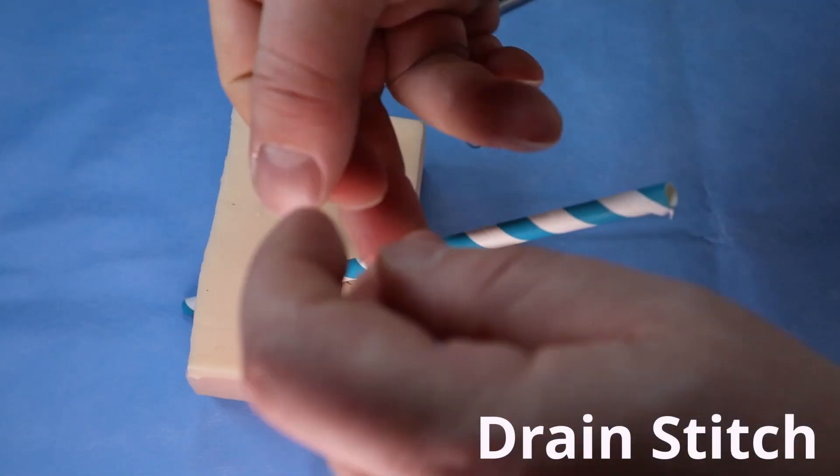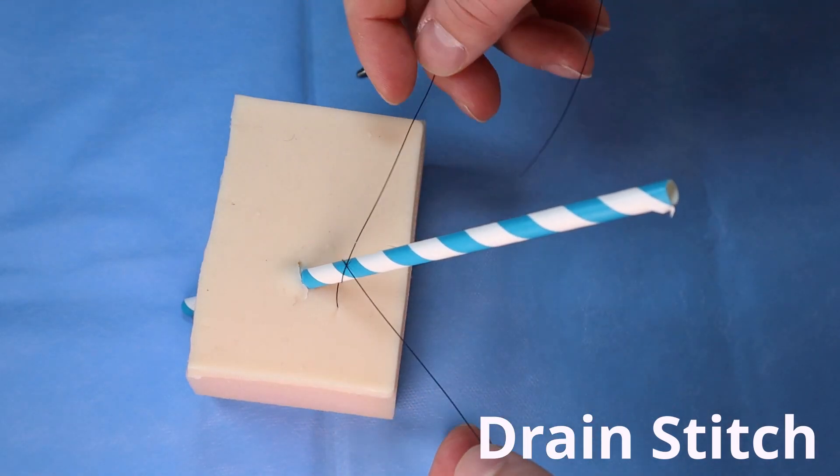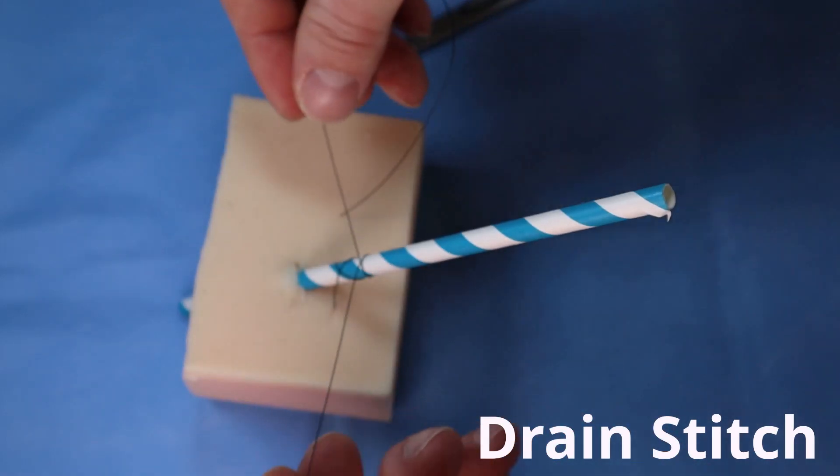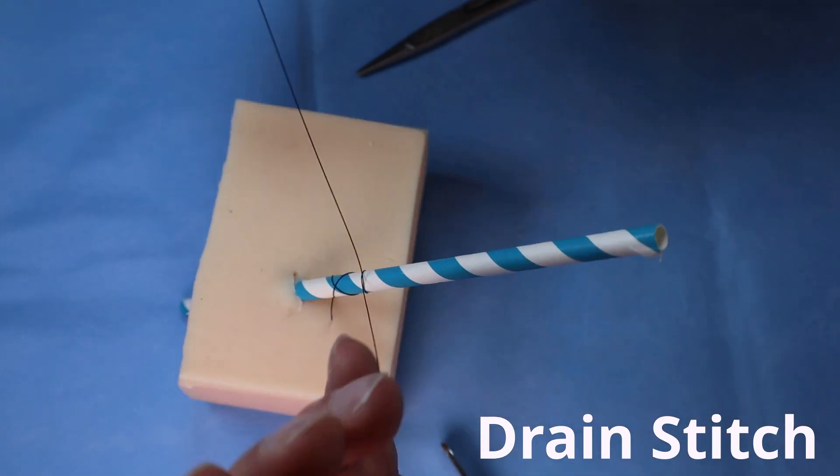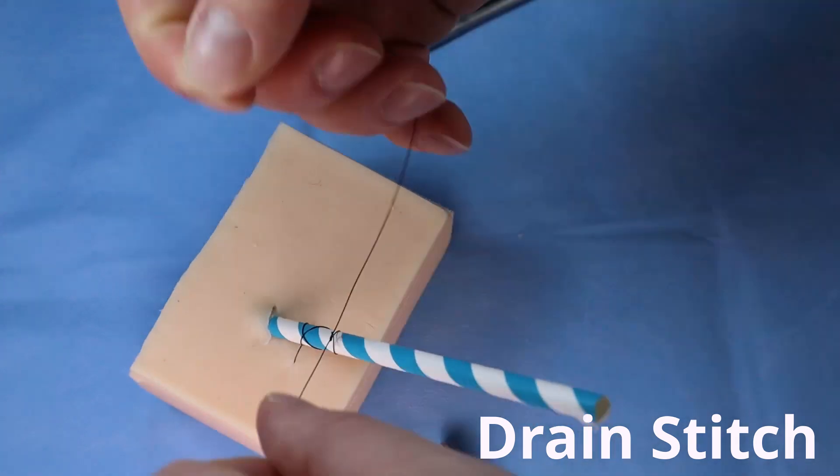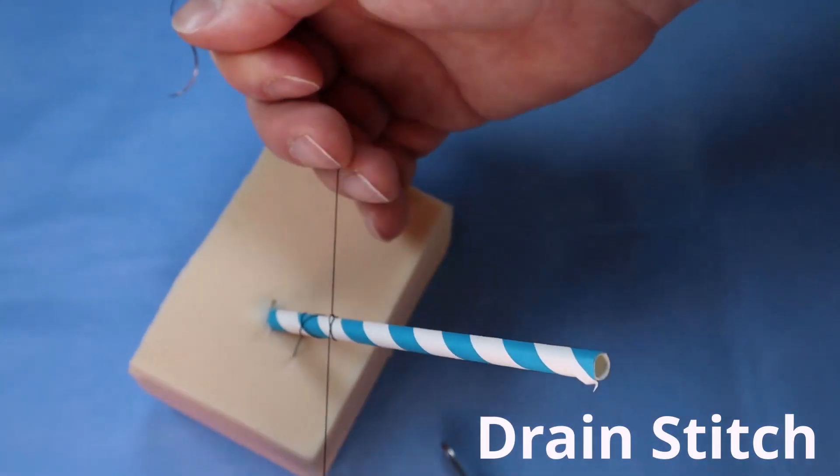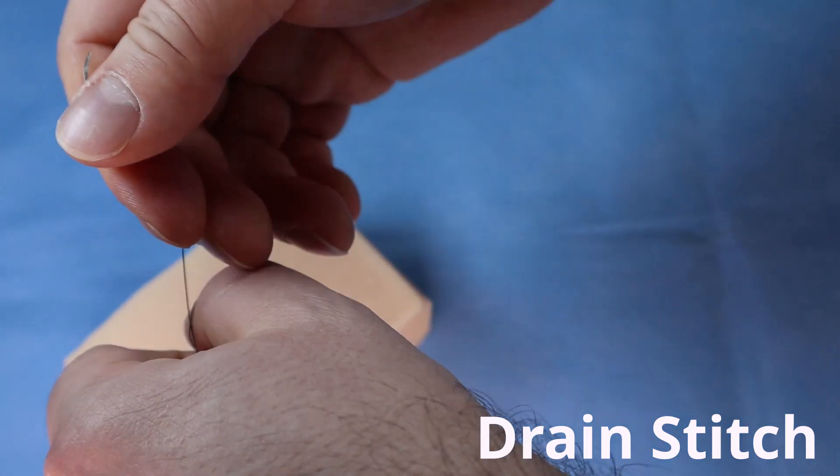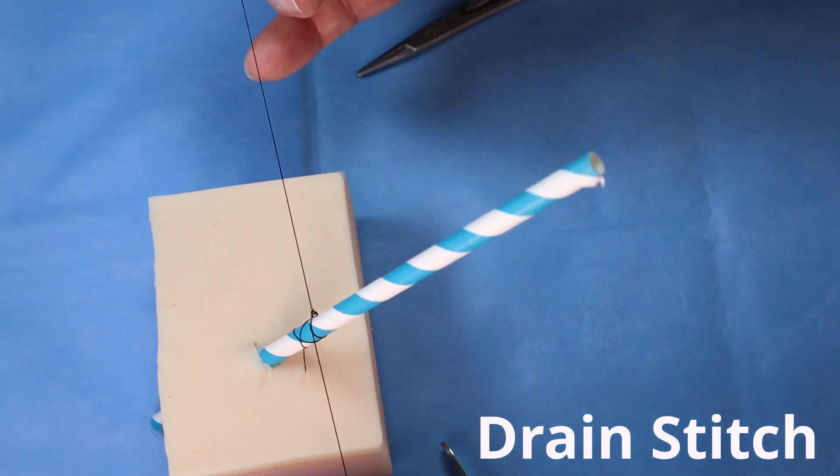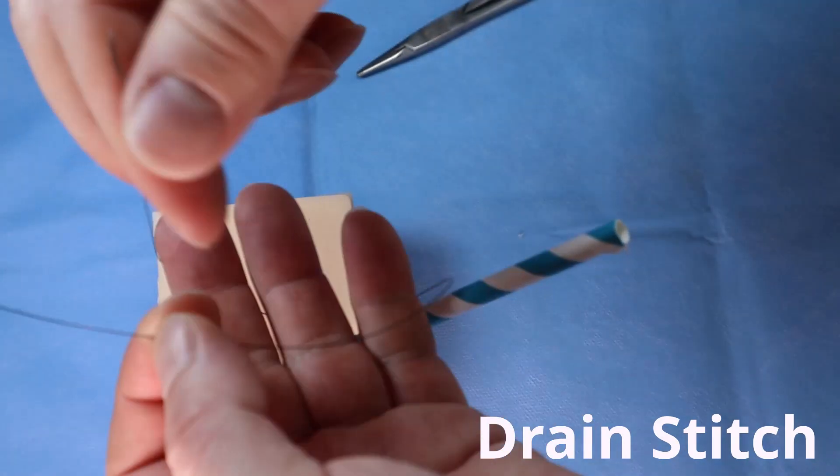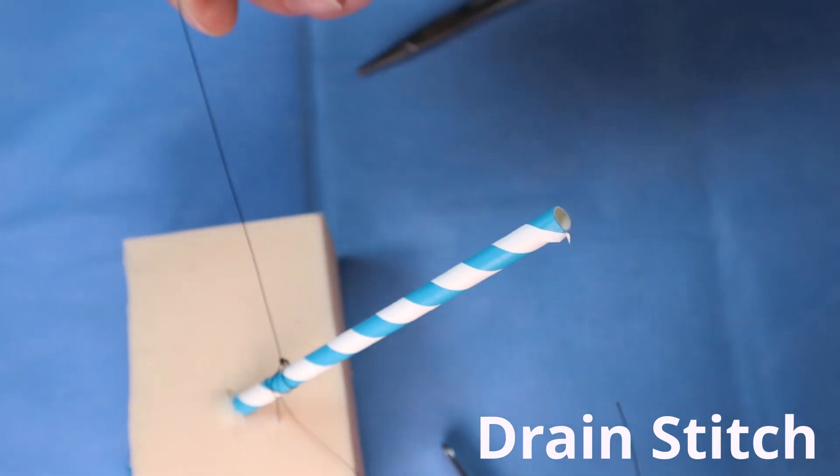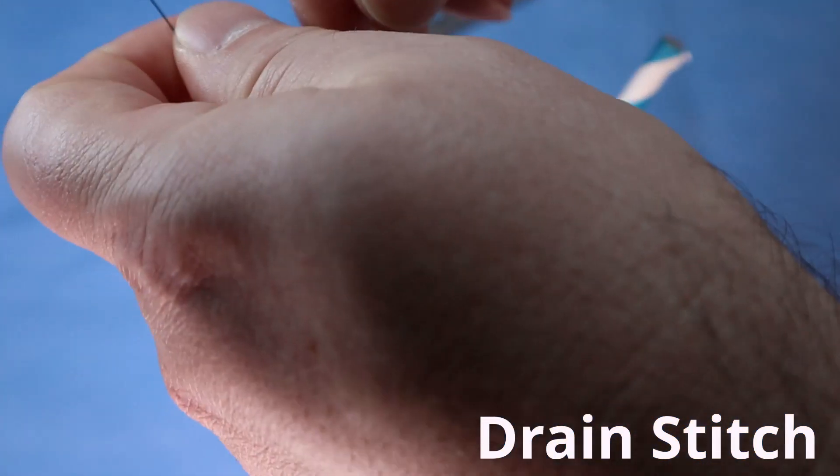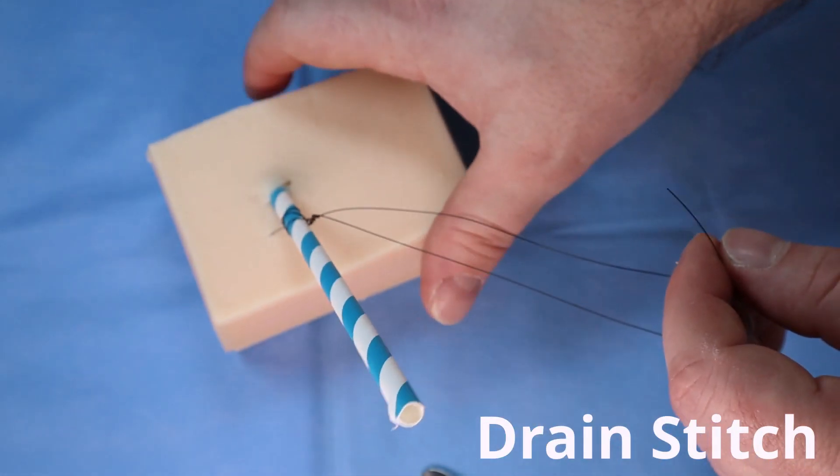Now I'm going to do what's often called a Roman sandal, which is wrap this around a couple times. Like so. And then I'll do a knot around the drain. Since this has a lot of memory, I'll do five throws with my knot.